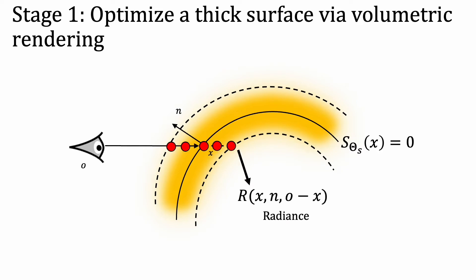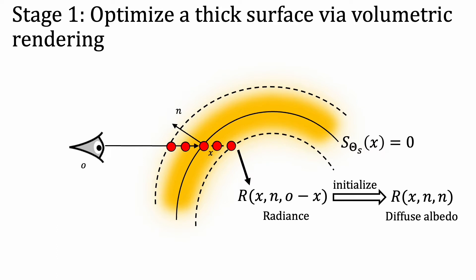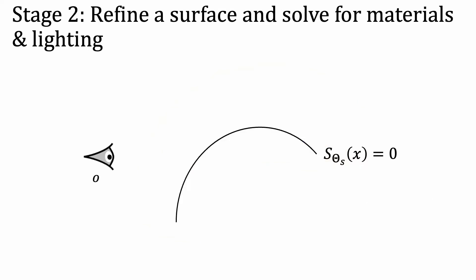The color at each point is computed using a radiance MLP that predicts a view-dependent color. Once this volume radiance field rendering optimization is complete, we can easily use this radiance MLP to initialize our diffuse albedo MLP in the subsequent surface rendering stage. We then perform a second stage of optimization of the neural SDF using physics-based surface rendering based on standard mesh rendering.